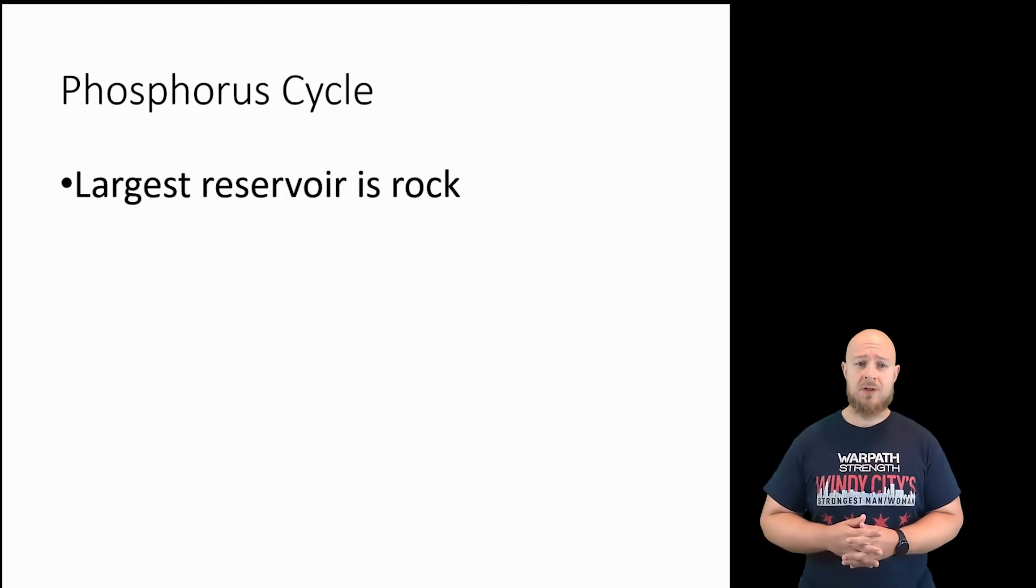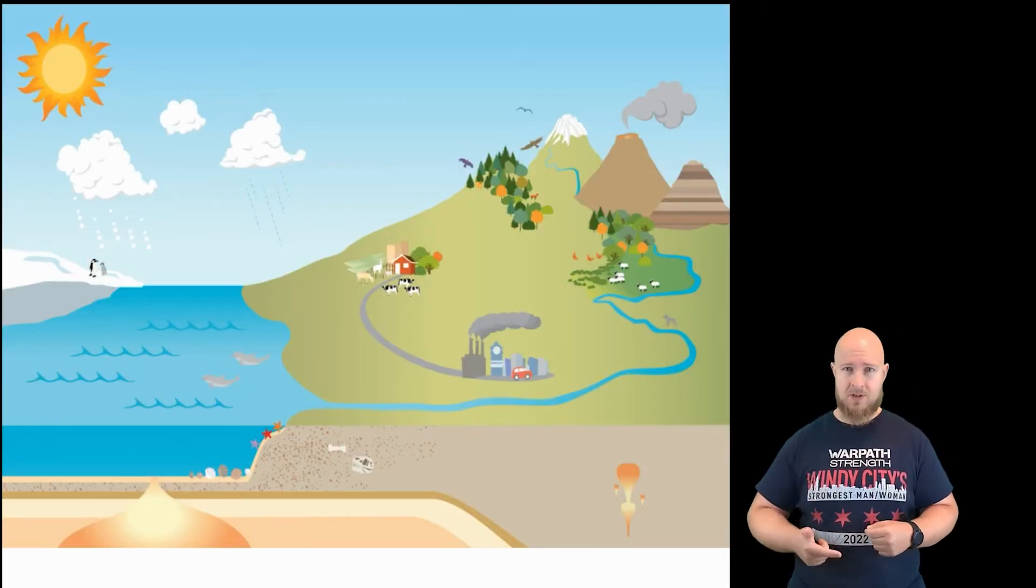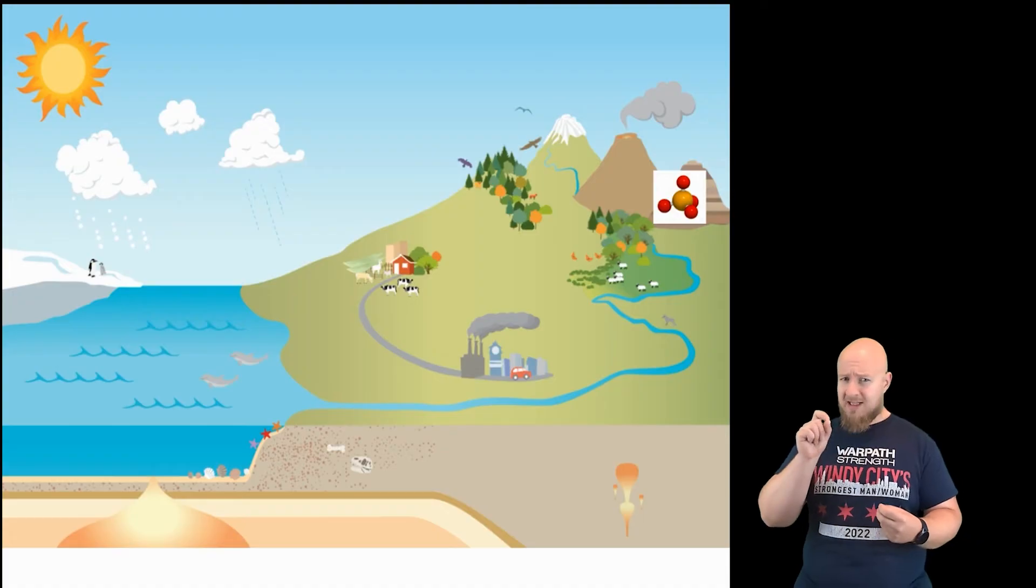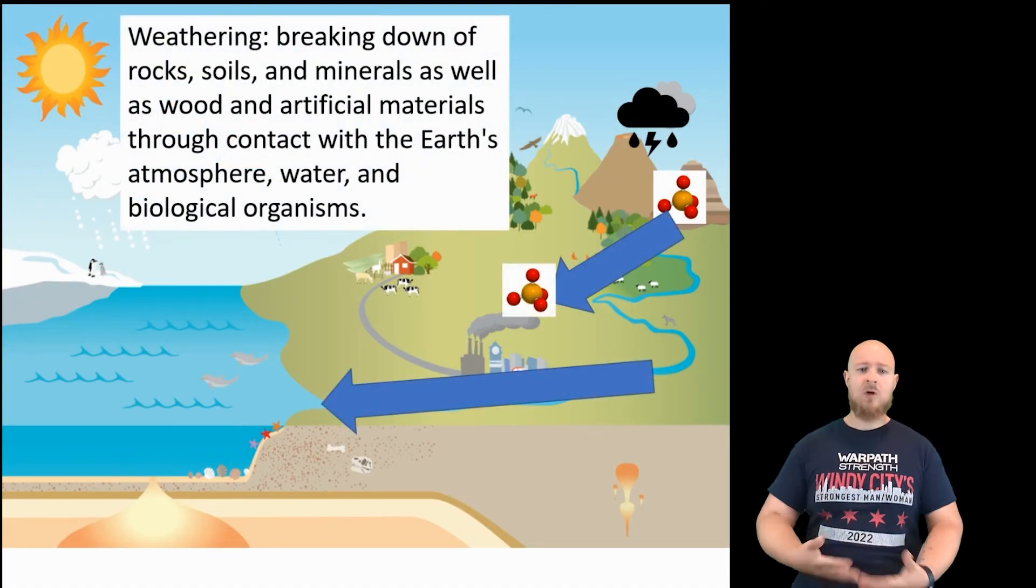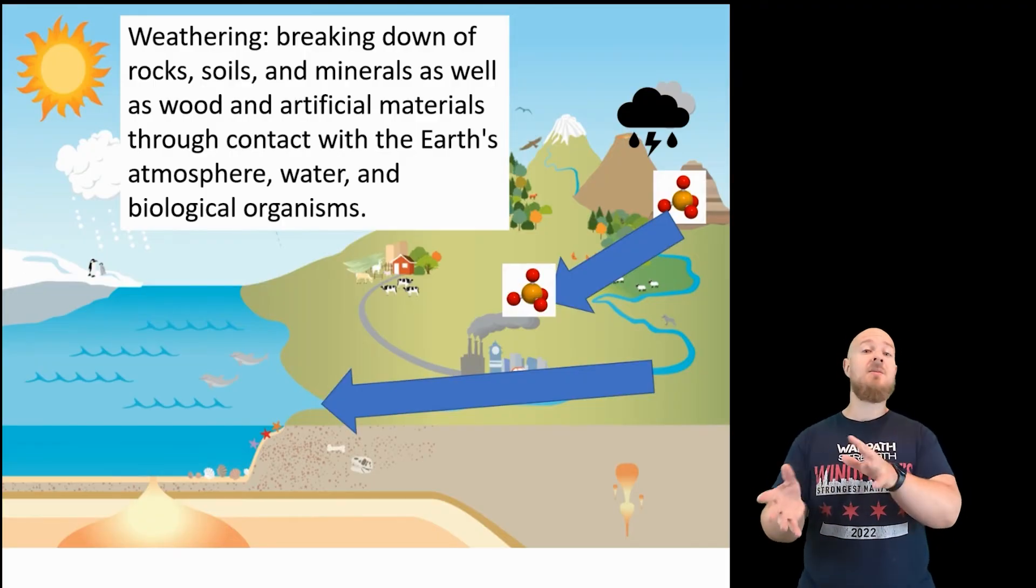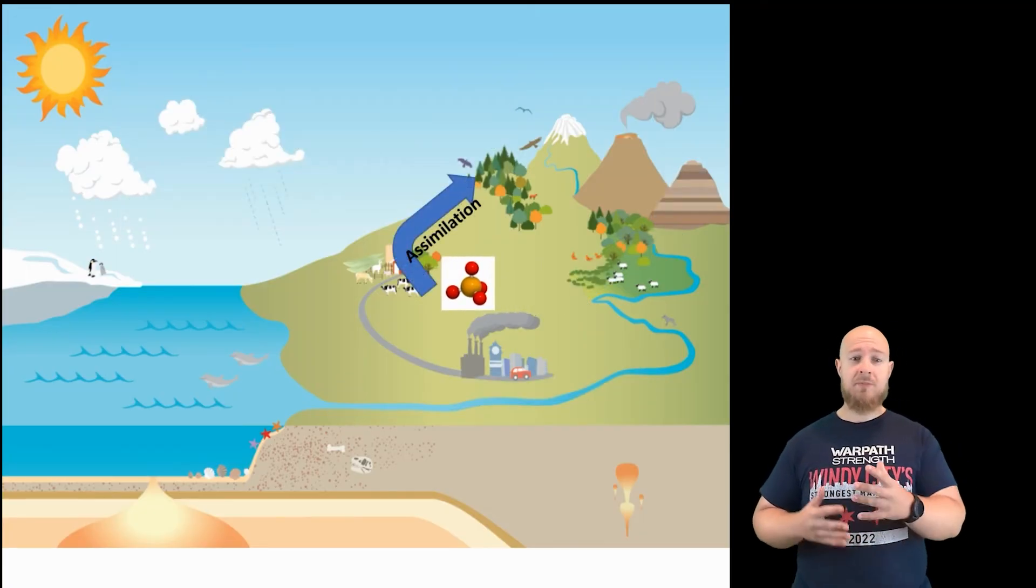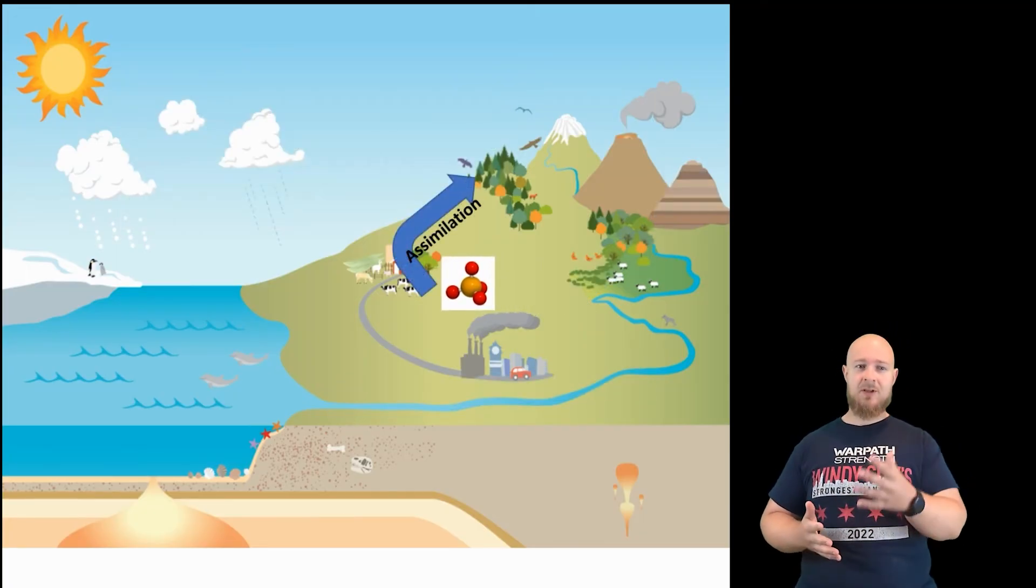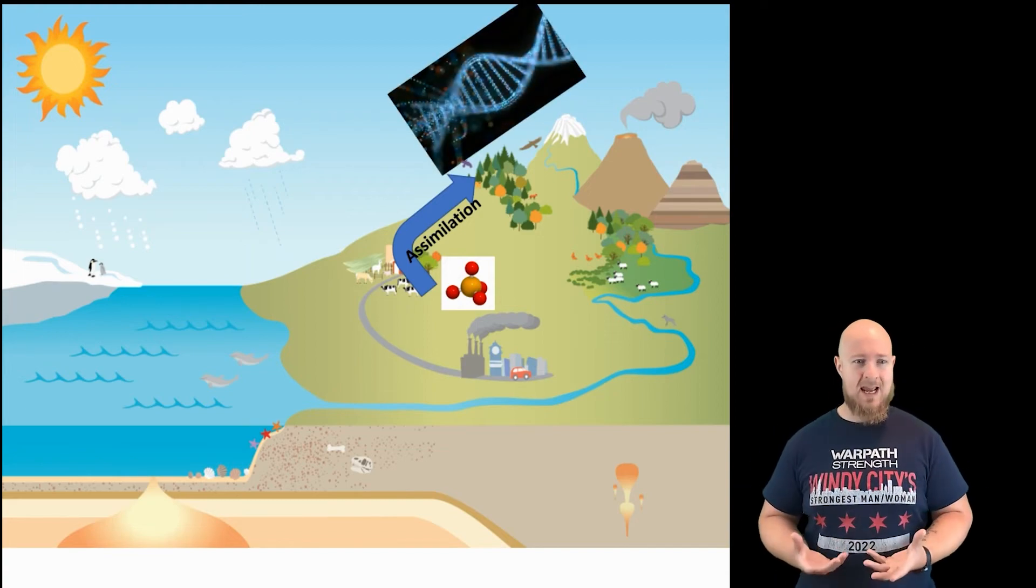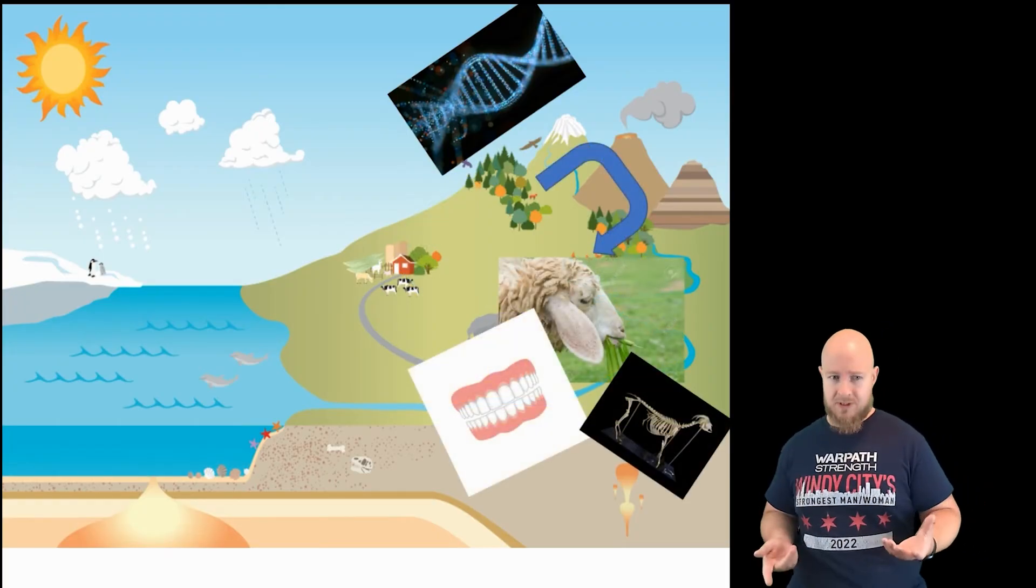With the phosphorus cycle, I want to start with the mountains over there, because they contain rocks that have minerals that contain phosphorus. Now, when it rains, a process called weathering occurs where little tiny bits of this phosphorus is being washed away, and it runs off into soil or bodies of water, and it gets deposited somewhere else. That phosphorus can now be assimilated by plants, and of course, plants use the phosphorus they have assimilated to build molecules that require phosphorus, like the backbone of DNA. Phosphorus can then move further through food webs as one organism consumes another.